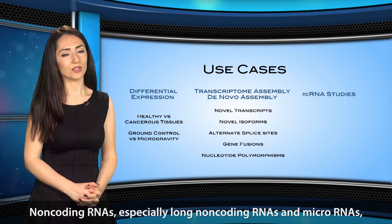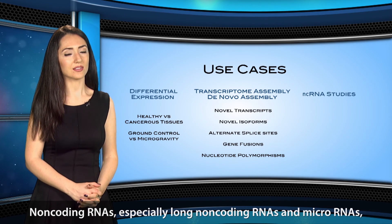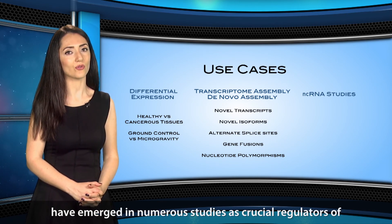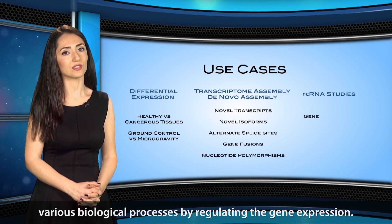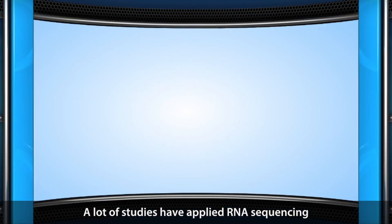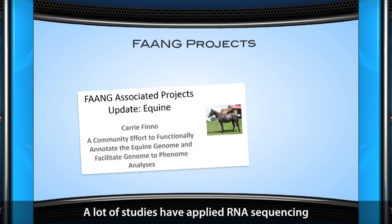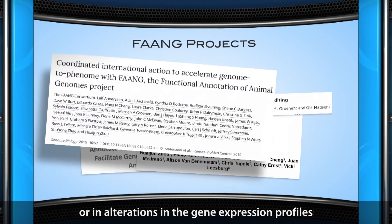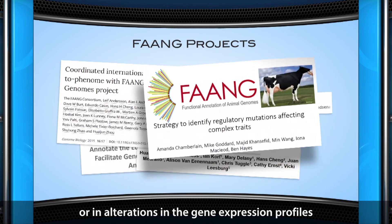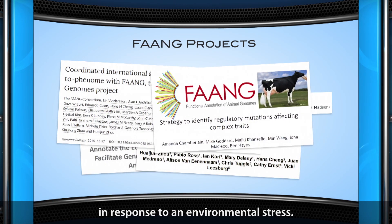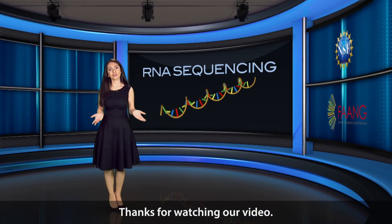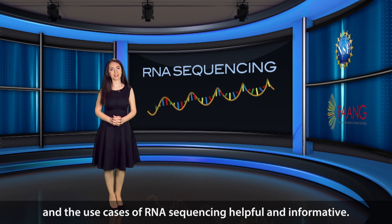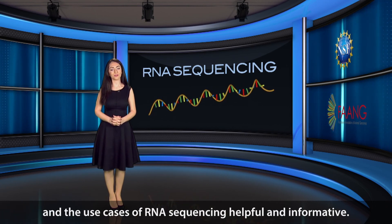Non-coding RNAs, especially long non-coding RNAs and microRNAs, have emerged in numerous studies as crucial regulators of various biological processes by regulating gene expression. A lot of studies have applied RNA sequencing in deciphering disease associations with gene expression, or in alterations in gene expression profiles in response to environmental stress. Thanks for watching our video. We hope you found this overview about RNA sequencing and its use cases helpful and informative.